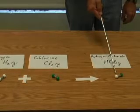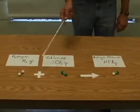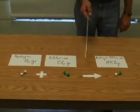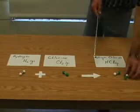And we can see that that is not going to work out. We have an extra white ball, which represents a hydrogen atom, and an extra green ball representing a chlorine atom. What we'll have to do is make a second molecule.